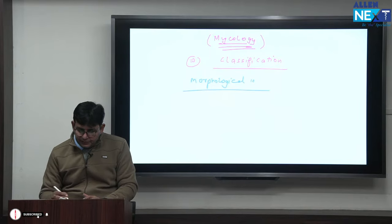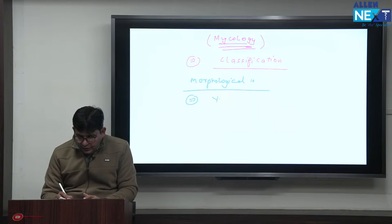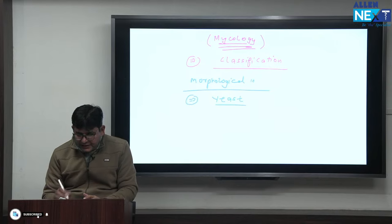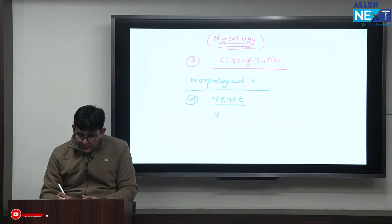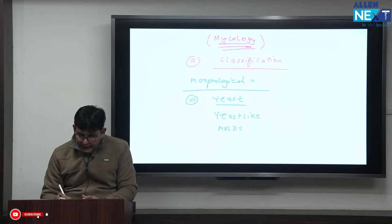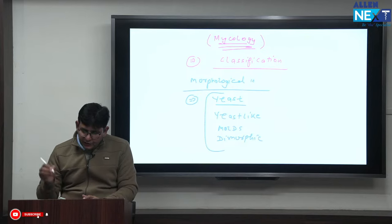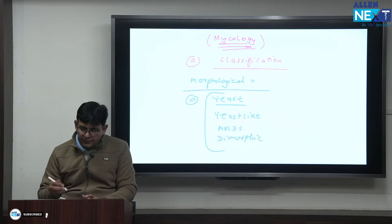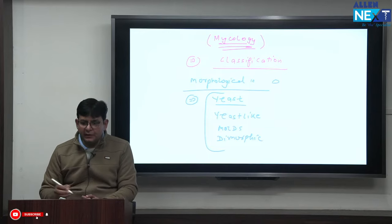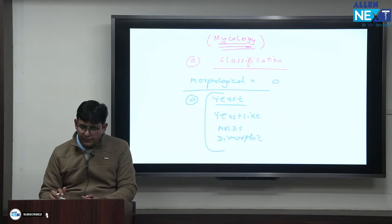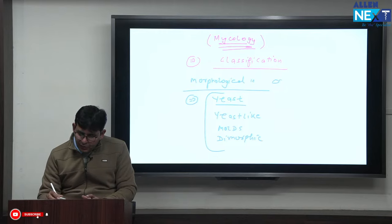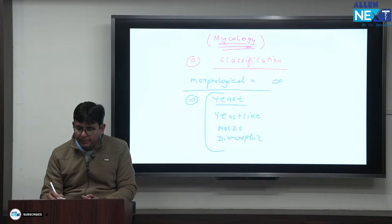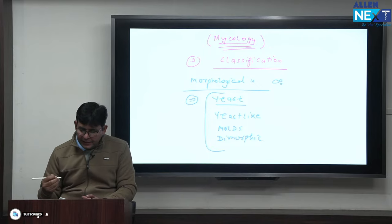In the morphological classification, you should know: there is yeast, there is yeast-like, then molds, and then dimorphic. Yeast is basically an oval-shaped structure. If a small protuberance occurs on it, that is termed a budding yeast cell.